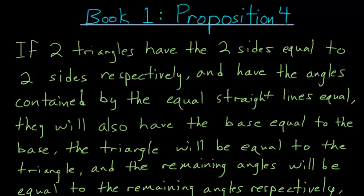Book 1, Proposition 4 of Euclid's Elements is the first non-construction proof in the book.